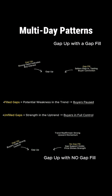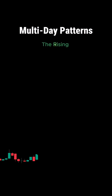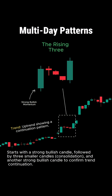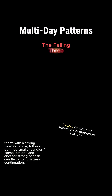Lastly is the rising three or falling three pattern. This pattern balances momentum with a pause. In an uptrend, you'll have one large bullish candle that pushes higher. Then you'll see two to three smaller candlesticks that consolidate but stay inside that larger candle, usually moving lower. Then the trend continues with another strong bullish candlestick. In a downtrend...